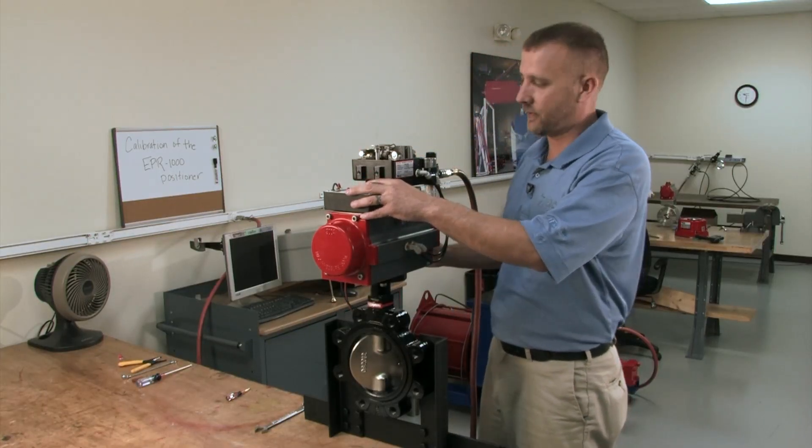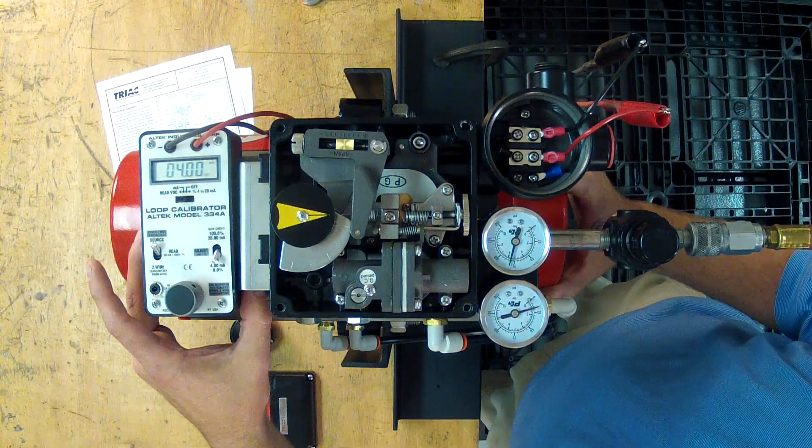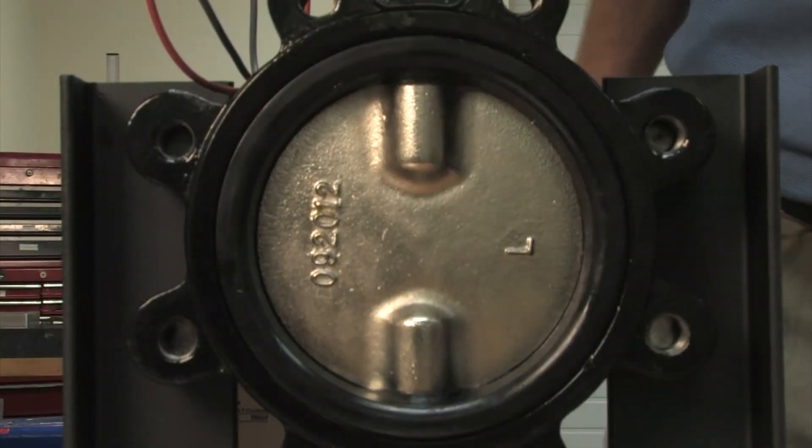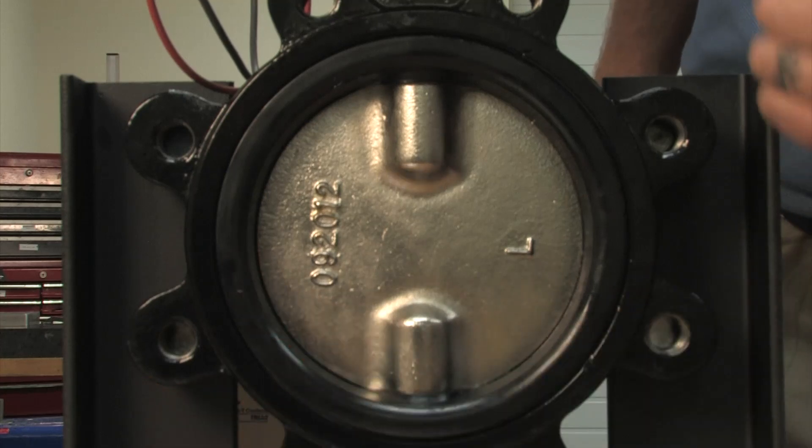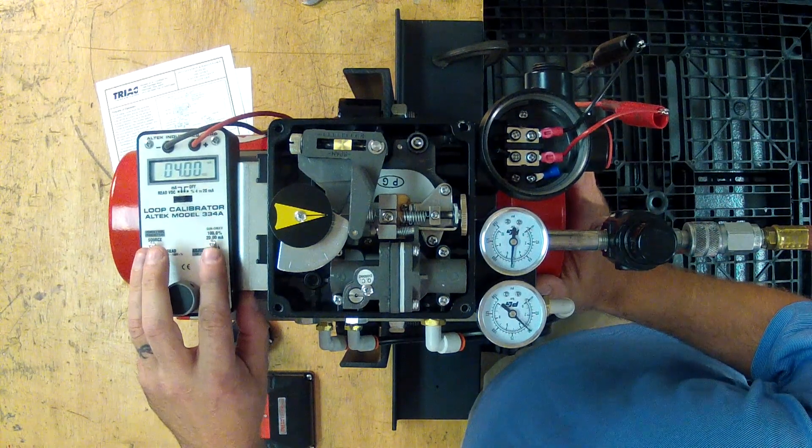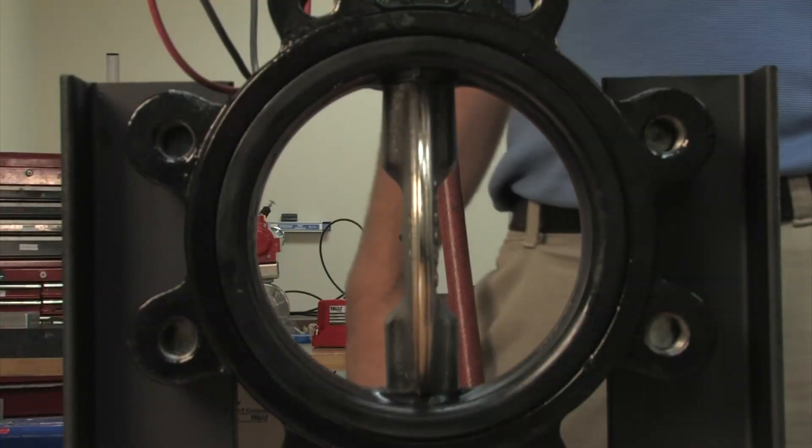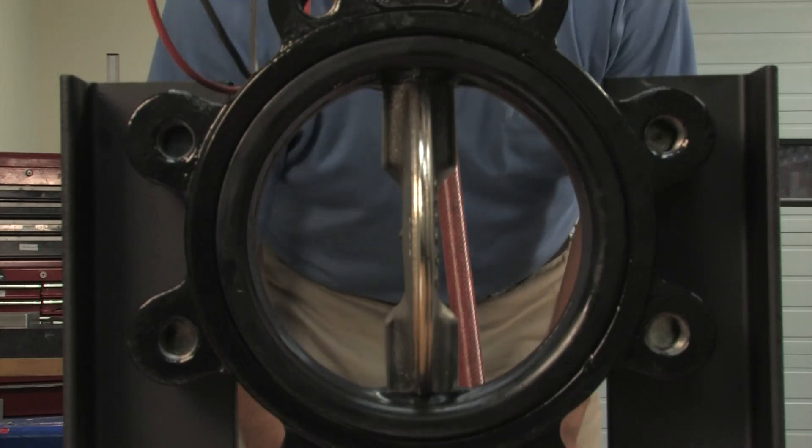So now we're going back down to 4 milliamps. And you're looking for a nice even seat in your valve, which we have here. A nice even distance on this side to this side. Back to 20 milliamps and you want a nice straight through parallel to the actuator flow pattern.